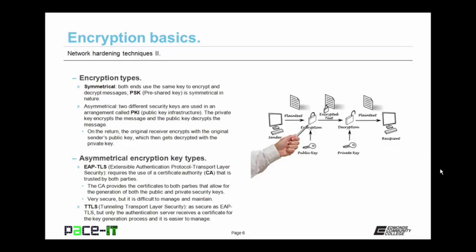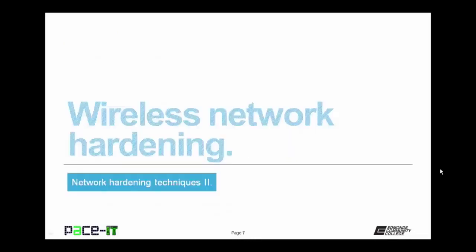There are two main types of asymmetrical encryption keys. There is the EAPTLS type key — Extensible Authentication Protocol Transport Layer Security. It requires the use of a Certificate Authority, or CA, that is trusted by both parties. The CA provides the certificates to both parties that allow for the generation of both the public and private security keys. It's very secure, but also difficult to manage and maintain. Then there's TTLS, Tunneling Transport Layer Security. It's as secure as EAPTLS, but only the authentication server receives a certificate for the key generation process, and it's easier to manage and maintain than EAPTLS.